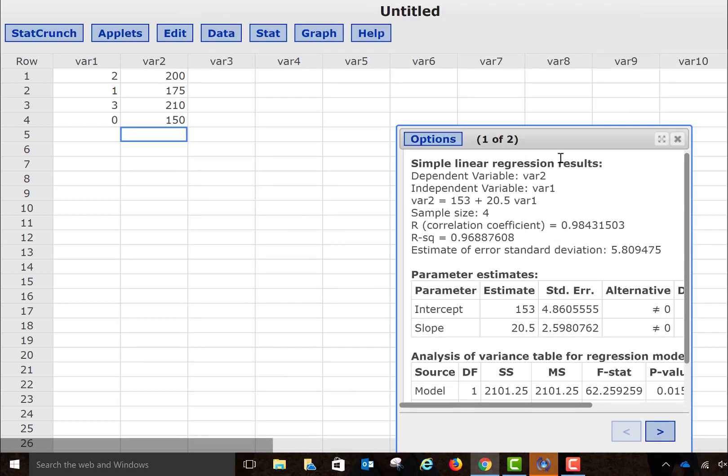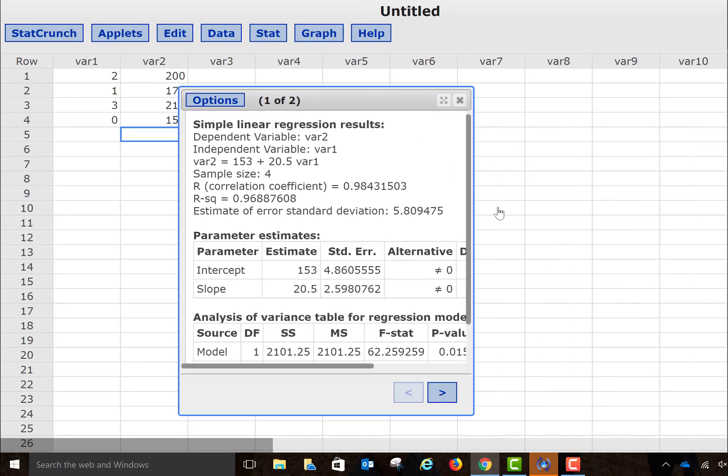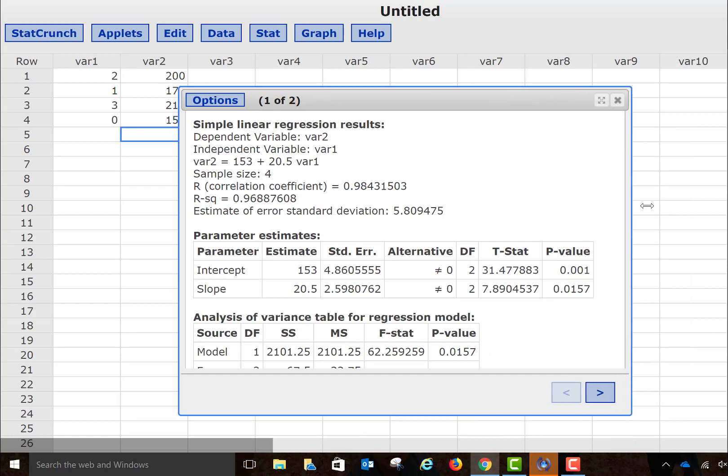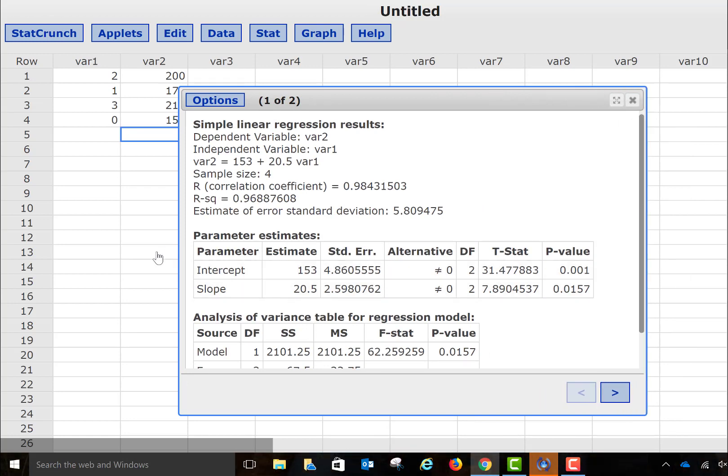Then, I can press Compute, and now, you want to make sure that you read your output table very carefully. Now, it shows me right here the value of my correlation again, so if I need that value, I can still get it through this method.